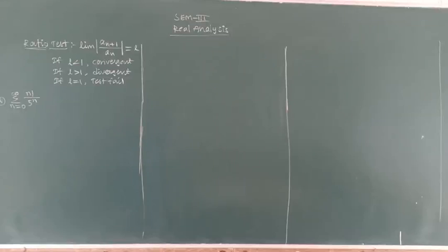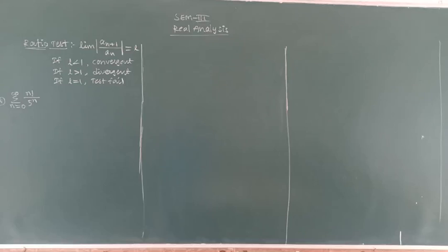Ratio test. The ratio test states: the limit of |a_{n+1} / a_n| equals L. If L is less than 1, then the given series is convergent. If L is greater than 1, then the given series is divergent. If L is equal to 1, the test fails.